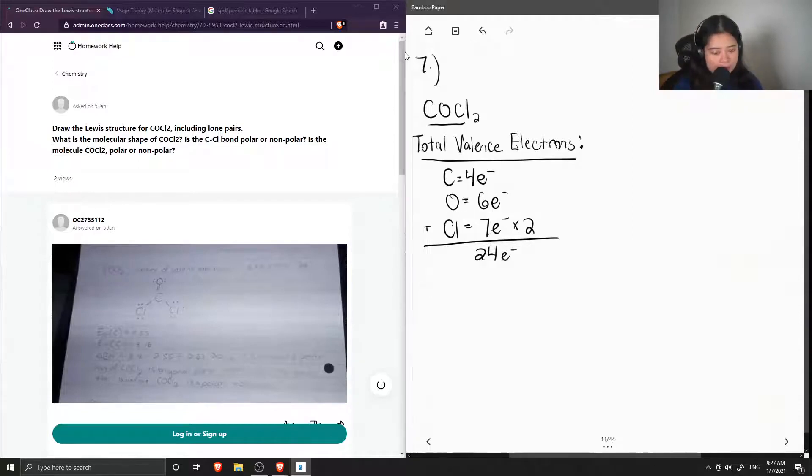Okay, so now assuming that my carbon is the central atom, because it is the least electronegative, I'm then going to draw all of the terminal atoms, and then from there I'll show all of the lone pairs on the terminal atoms. Okay, so before I draw the lone pairs on the oxygen, I first like to analyze to see if carbon has a full octet, and you can already see that it does not.